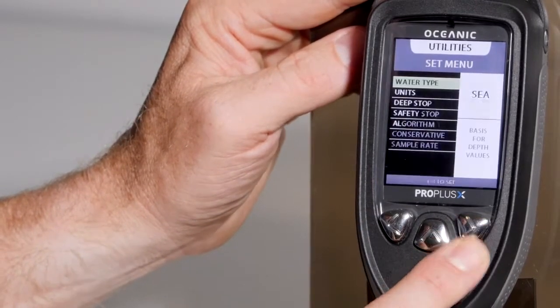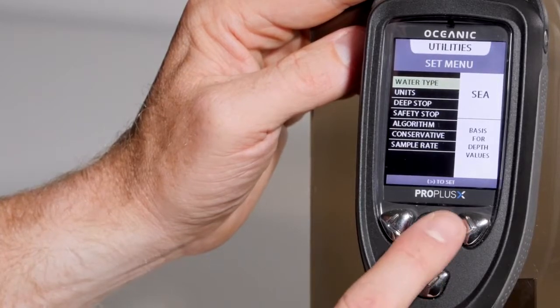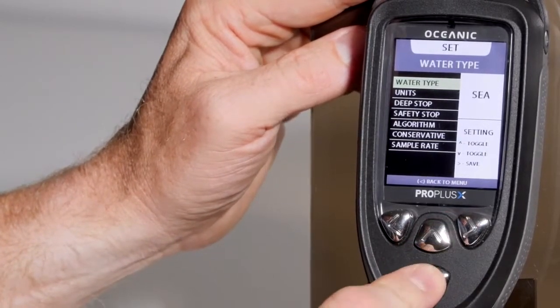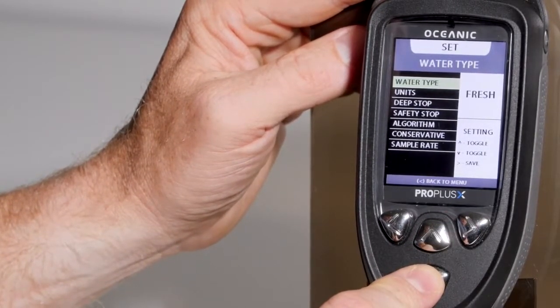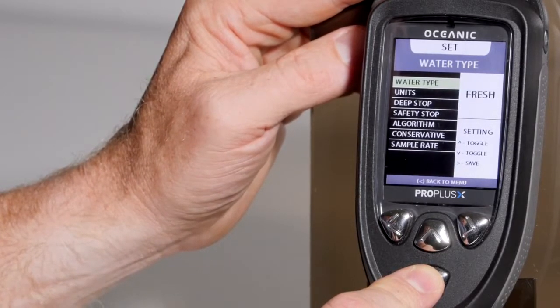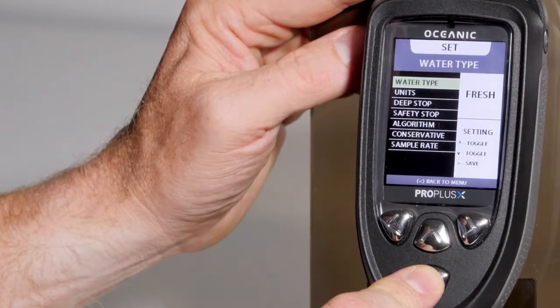Under the set utilities, you can set up water type. You can change it from sea to fresh. Changing it to fresh water will deactivate the water activation feature of the computer, as the computer would assume you're diving at altitude.